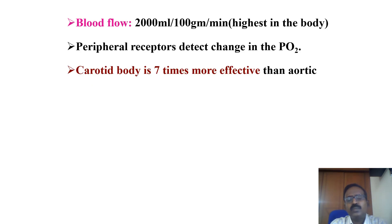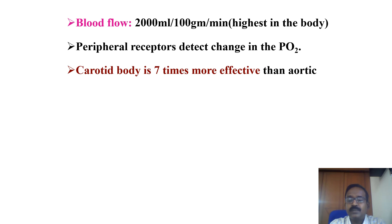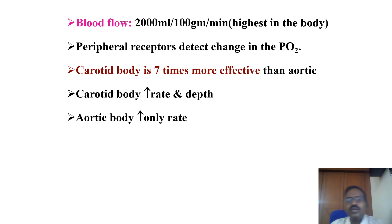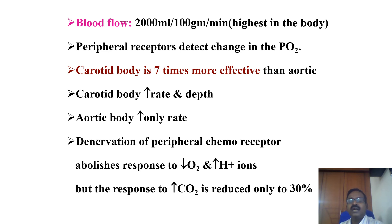Blood flow to the carotid body is very high — 2000 ml per 100 grams per minute — but the actual weight of the carotid body is only 2 milligrams, supplying 0.04 ml of blood per minute. Compared to the kidney and brain, it has the highest blood flow. The carotid body is seven times more effective than the aortic bodies. Carotid body stimulation increases both the rate and depth of respiration, while the aortic body mainly increases the rate of respiration.